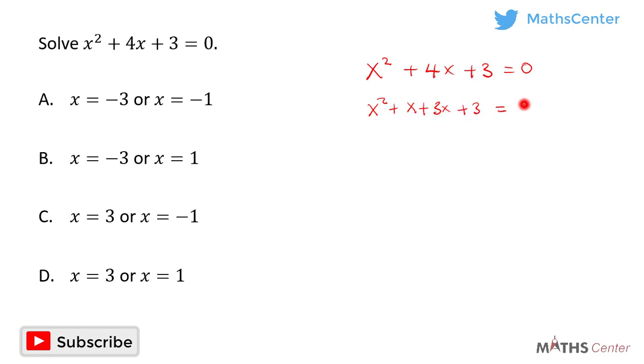The first two terms are x squared and x. The common factor is x, so we take it out and are left with x plus 1. The remaining terms are 3x and 3. The common factor is 3, so we take 3 out and are left with x plus 1, and this equals zero.